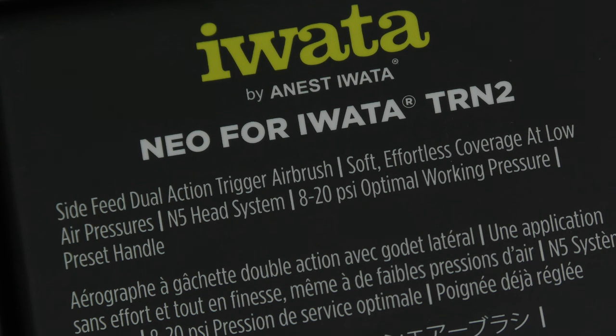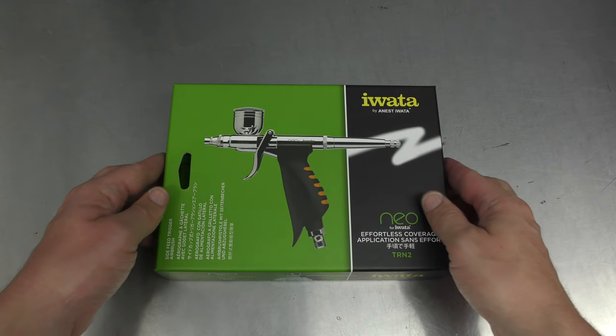So this is a side feed dual action trigger airbrush. Soft effortless coverage at low air pressures. N5 head system, 8 to 20 PSI optimal working pressure, and a preset handle. Let's go ahead and open up the box.